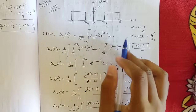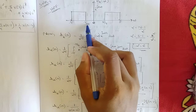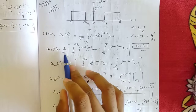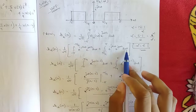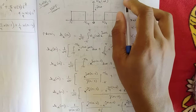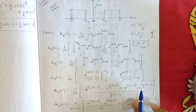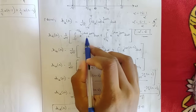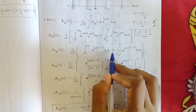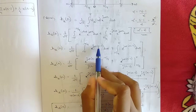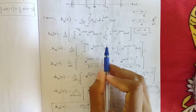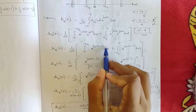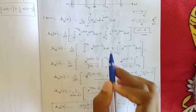Split the integration limits according to the question: from minus pi to minus pi/4 and from pi/4 to pi. Write it as 1/(2π) with those two intervals and substitute Hd(ω) = e^(-j2ω) as given. After substitution, the integrand becomes e^(j(n-2)ω), and we integrate with respect to omega.